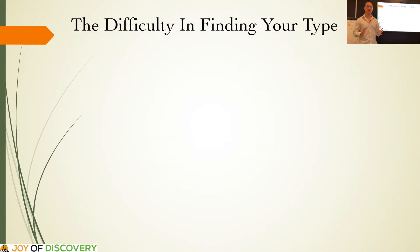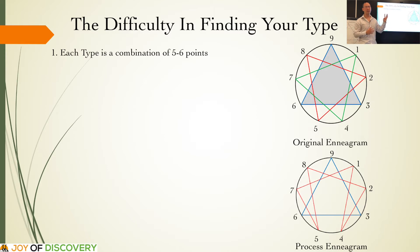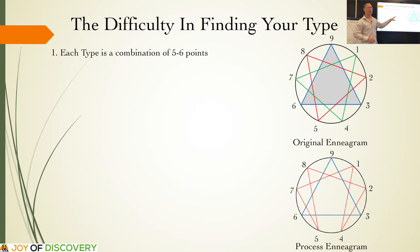Now let's look at the original Enneagram diagram. Each type is a combination of five to six different points. For example, if you look at type 3, it is attached to 2 and 4, and also to 6 and 9 — four other points apart from the home point. They may all be part of your core point 3. The same applies for every other type. So if tested at 9, you are actually a combination of 8 and 1, as well as the two other points on the triangle attached to point 9, which are 3 and 6.